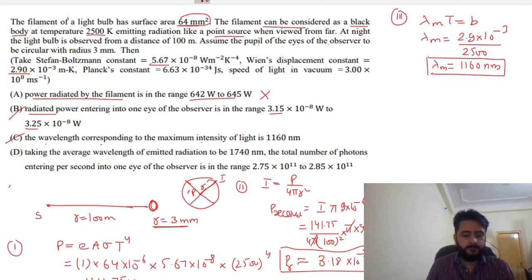Now let's go to Part D. Taking the average wavelength emitted, how much is emitted? Total number of photons entering per second into the eye. How many photons entering per second?